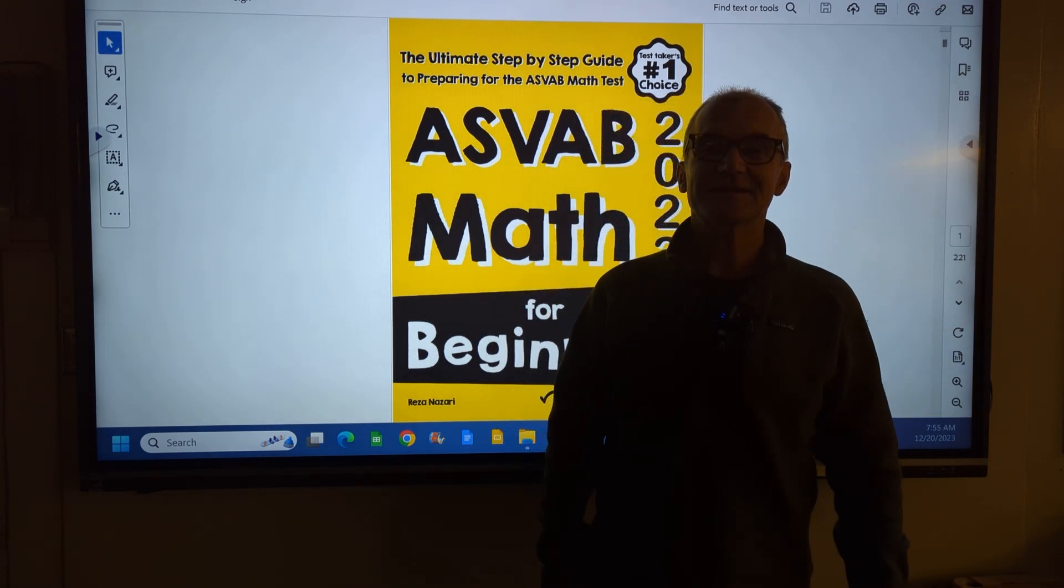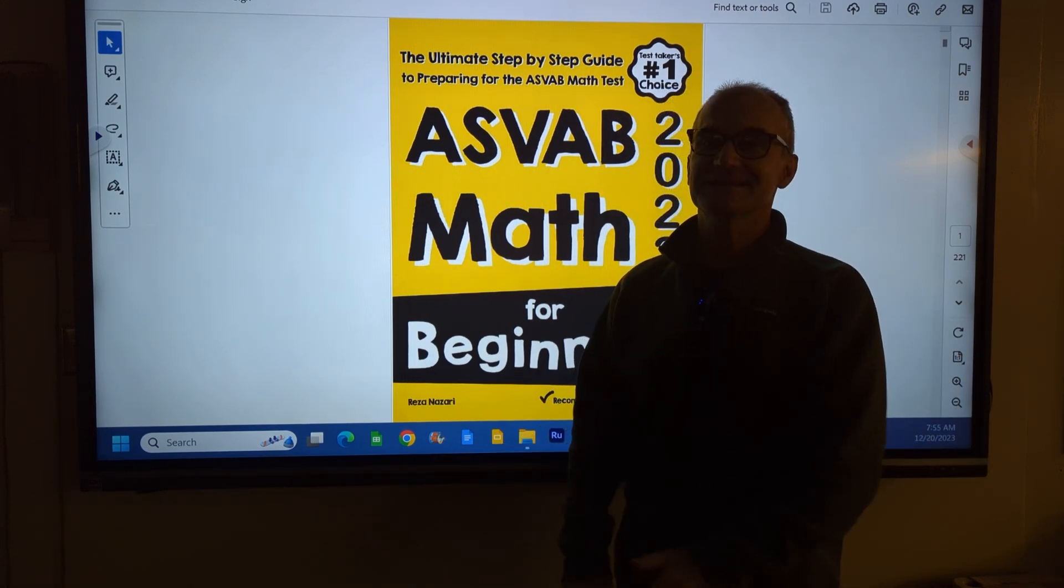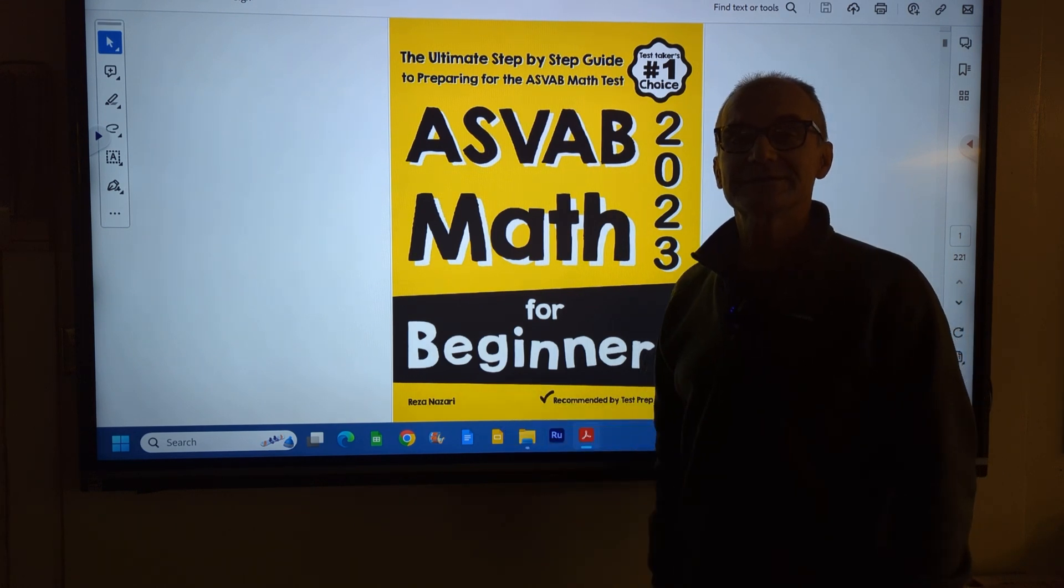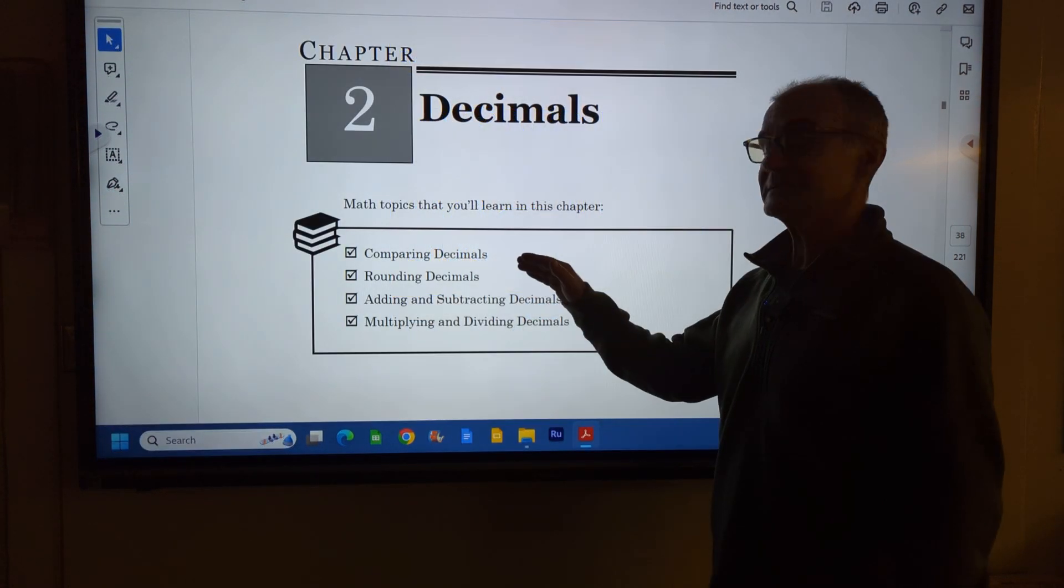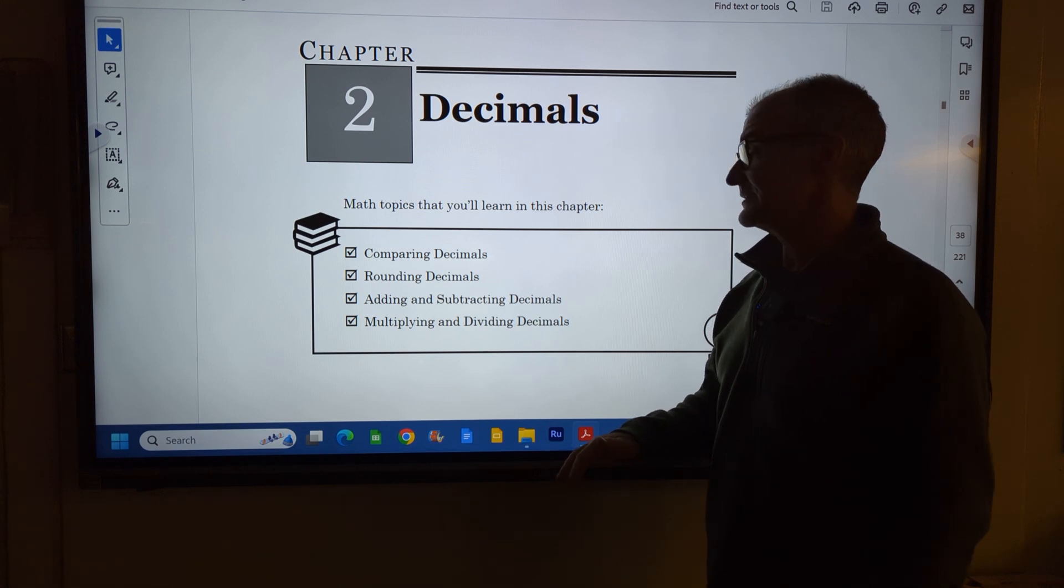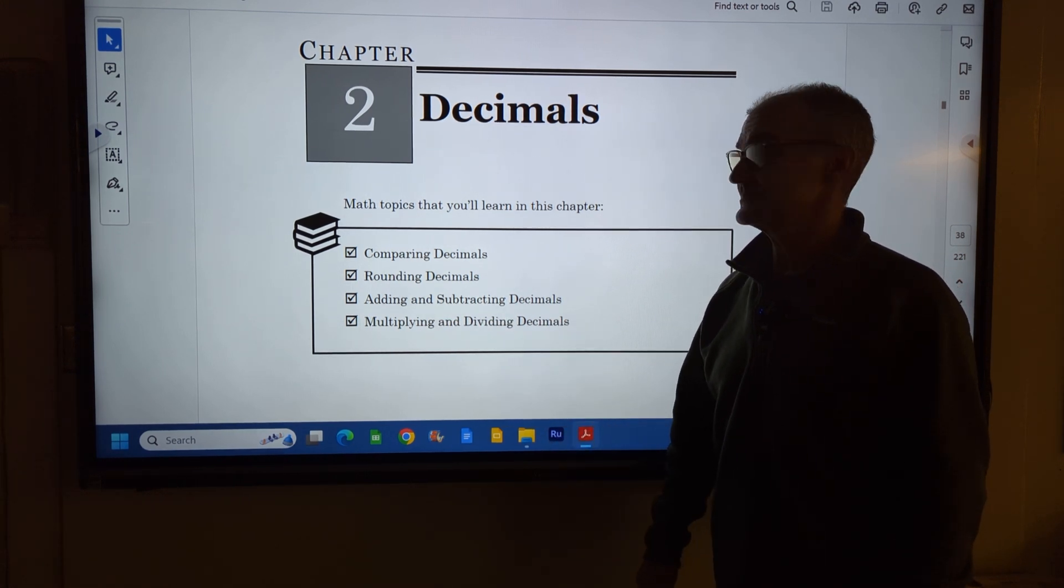Hey fellow problem solvers, Colfax Math here. The way you learn math is by practicing, just like juggling. Today I'm going to go over the ASVAB math book, specifically chapter 2 on decimals: comparing decimals, rounding decimals, adding and subtracting decimals. I'm going to split multiplying and dividing decimals into a second video.